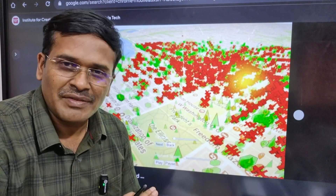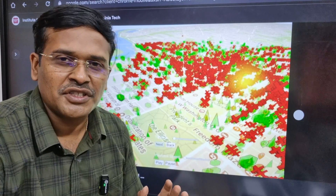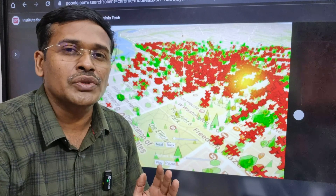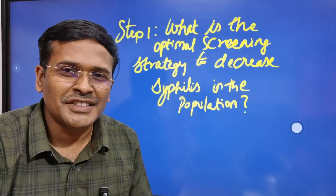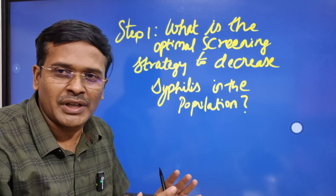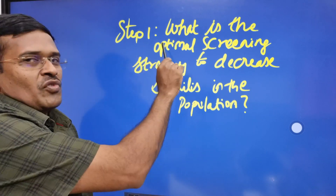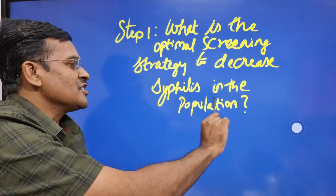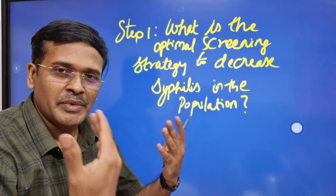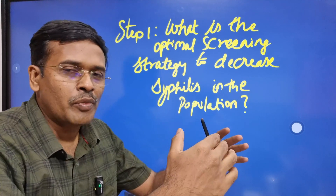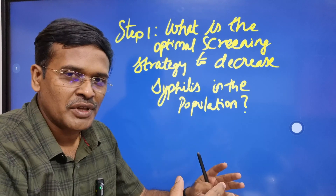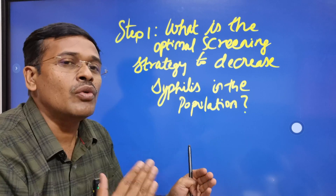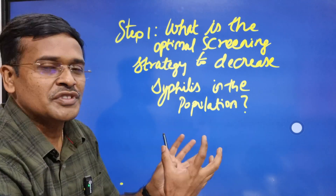Mathematical modeling actually works on seven steps. The first step involves framing the research question — what is the research question for which we want an answer? We will work with a hypothetical question. Step one: what is the optimal screening strategy to decrease syphilis in the population? Whether we have to screen the whole population or only the high-risk population — that is the question we want to answer so that we can optimally control syphilis in the population.